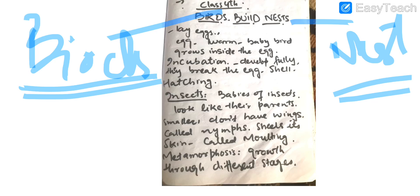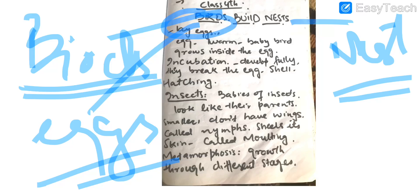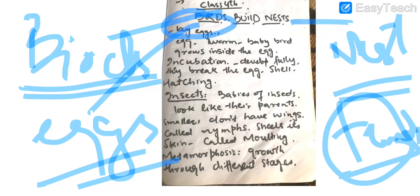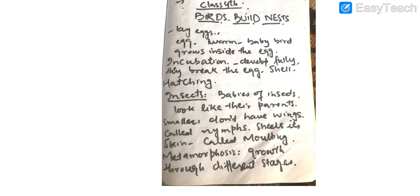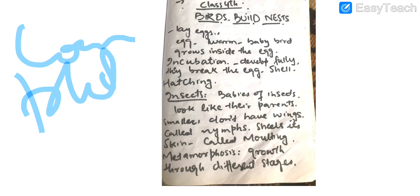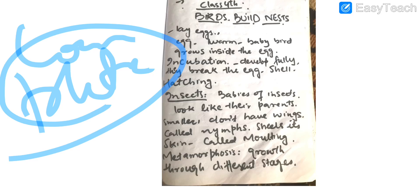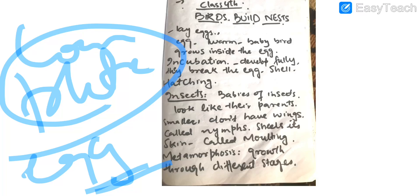A bird builds its nest in order to lay eggs. Generally, both the parents build the nest together, but the female bird lays eggs in the nest and the baby bird grows inside that egg. The baby bird present in the nest gets its food from the yolk that is present in the egg. It is very important for the egg to be in complete warmth.